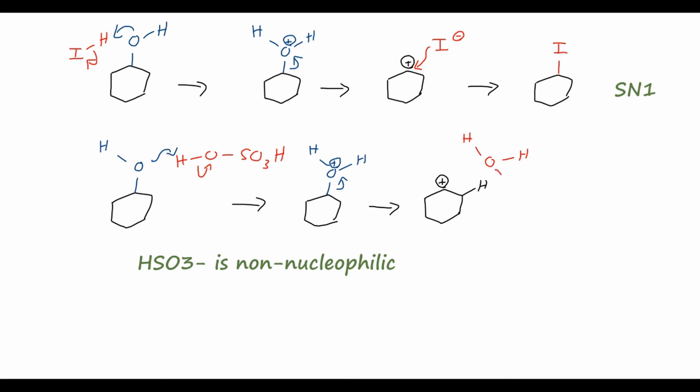So water can also act as a base, where it pulls off this adjacent hydrogen, and the bond to the hydrogen will swing down to capture the carbocation, giving us cyclohexene in an E1 process.